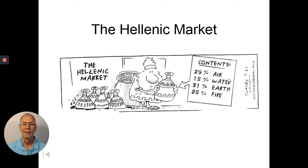composed of these four elements, 29% air, 15% water, 31% earth, and 25% fire. An early theory on matter was that everything was made of one of those four elements. They were the simplest things that they could come up with.